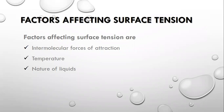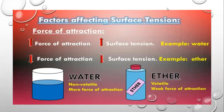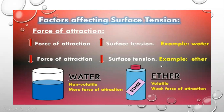Our next topic is factors affecting surface tension. There are three factors: intermolecular forces of attraction, temperature, and nature of the liquid. First, intermolecular forces of attraction. There is a direct relation between forces of attraction and surface tension. When forces of attraction among molecules increase, surface tension increases. Molecules will be non-volatile and have maximum surface tension, like water. Water has strong intermolecular forces named hydrogen bonding, so it has high surface tension. When force of attraction among molecules is low, surface tension will be low, like ether. Ethers have weak dispersion forces, so they are easily volatile and have less surface tension.